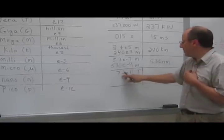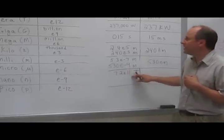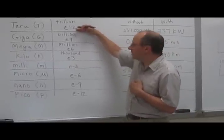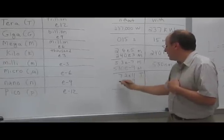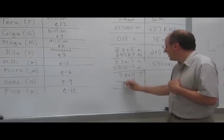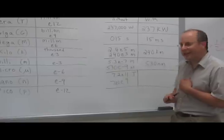Finally, 7.2 e to the 11th joules. e to the 11th, we're a little below trillion, so we want to drop it down to billion. e to the 9th, we move it 2 spots again. So that's 720 e to the 9th. That's 720 gigajoules.